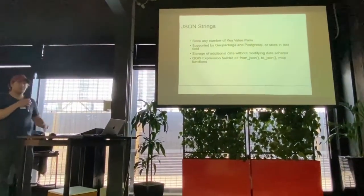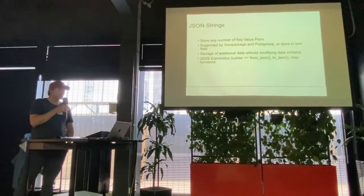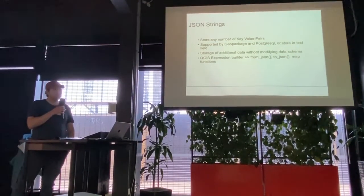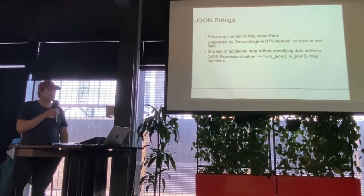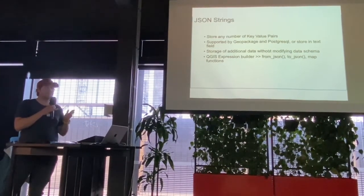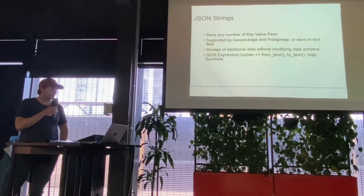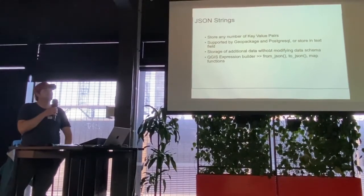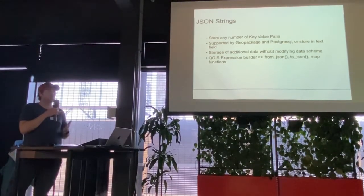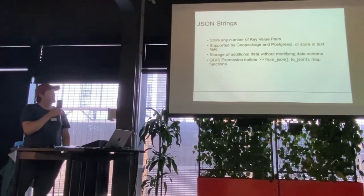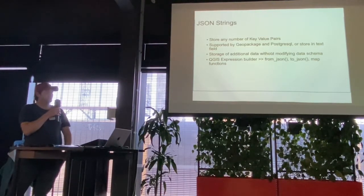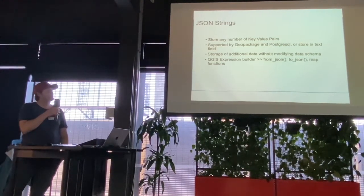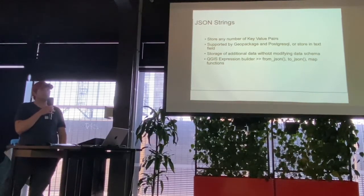So JSON strings — everyone probably knows what they are. You can store any number of key-value pairs that are supported by GeoPackage and PostgreSQL. You can store them just as text inside a shapefile, although shapefiles will limit you to a field length. What's been powerful for us is allowing us to essentially change our data schema — or record more things without changing our data schema. As we do a lot of research and development, we're constantly finding out we need to record more things than we thought. So pretty much every table in our database has a JSON field for that very reason.